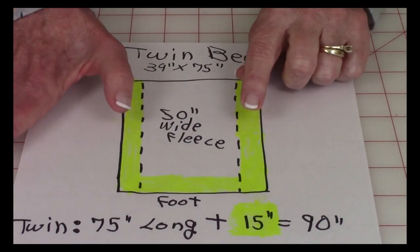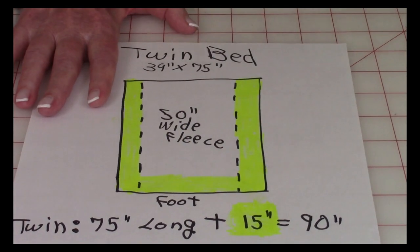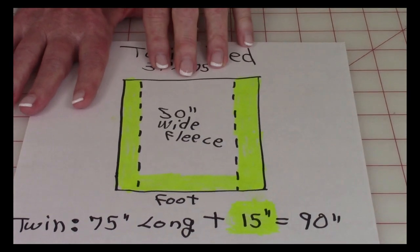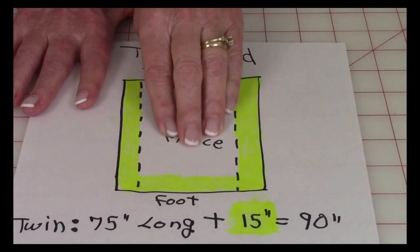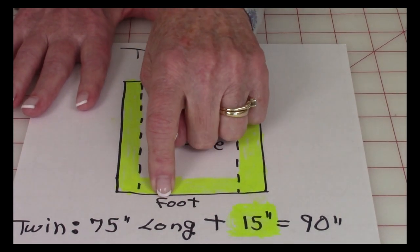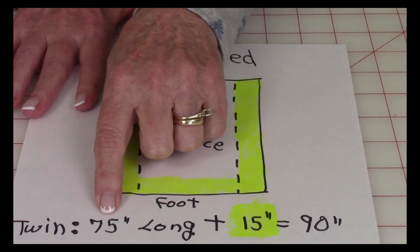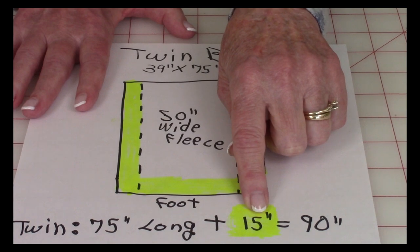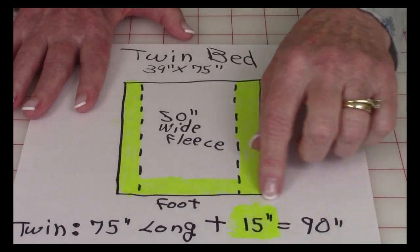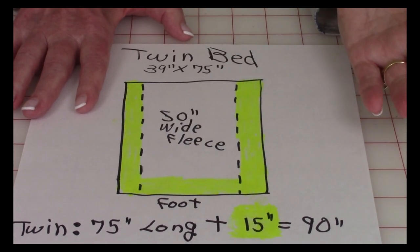So you need to calculate what the drop length is on each side. You're going to have a drop length on each side and a drop length that goes over the end of the bed also. So if you're using 50 inch wide fleece, you need additional length to go over the end of the bed down here. So 75 inches plus 15. So this is the drop length. Now this is the number I'm throwing in there.